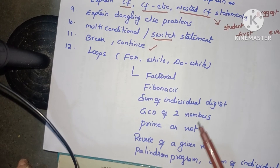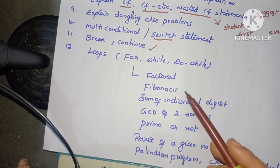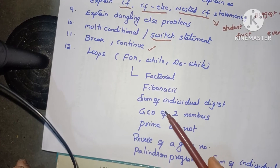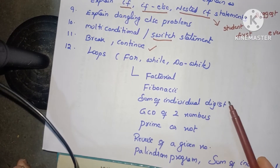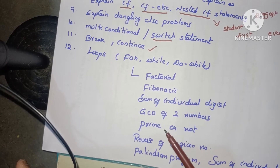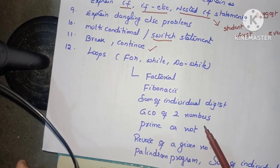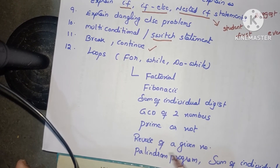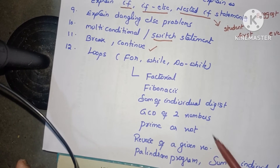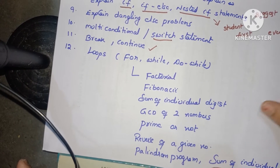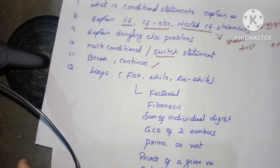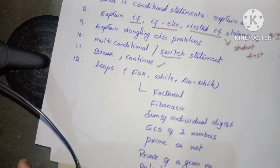Important example programs for loops include: factorial of a given number, Fibonacci series, sum of individual digits, GCD or LCM of two numbers, checking if a given number is prime or not, reverse of a given number, and palindrome program. These are all very important programs using for loop and while loop statements.